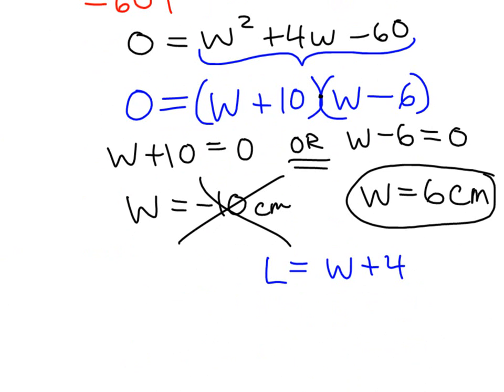So, it's a coincidence this is occurring, where length equals 6 plus 4, which gets us positive 10 centimeters. Just a coincidence that it happened to be the opposite of what the answer we tossed out. Doesn't always happen. So, we have our width and we have our length.